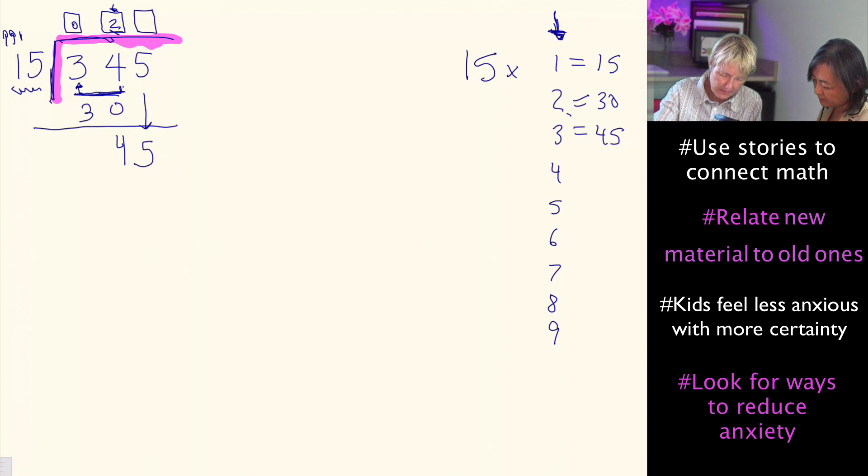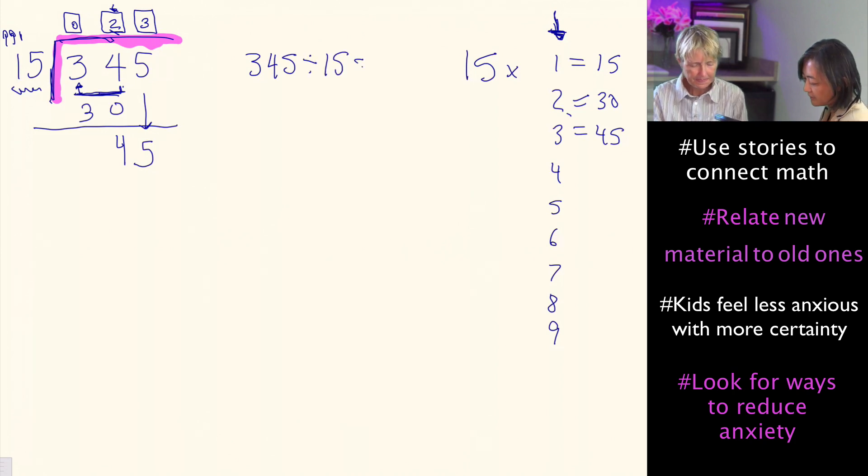15 times 3 is 45, so 23 is our answer. 345 divided by 15 equals 23. Let's finish on this side. It's 45 minus 45, which gives us zero.